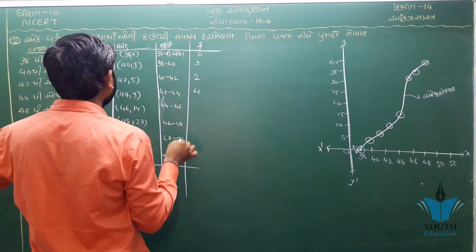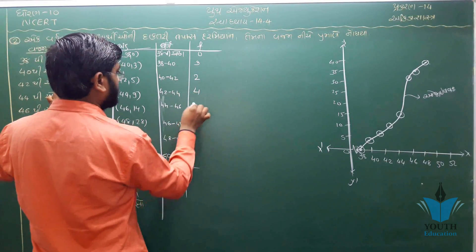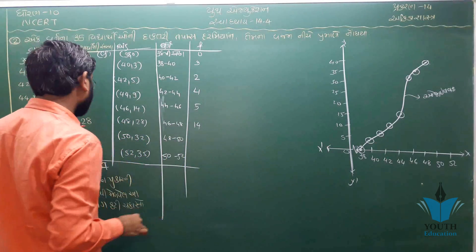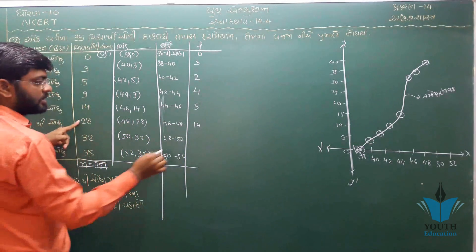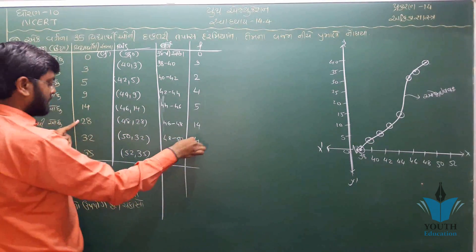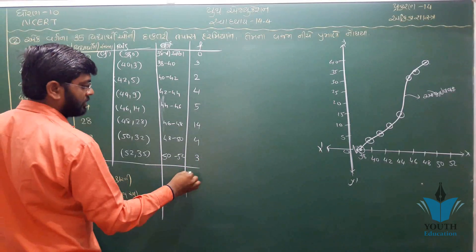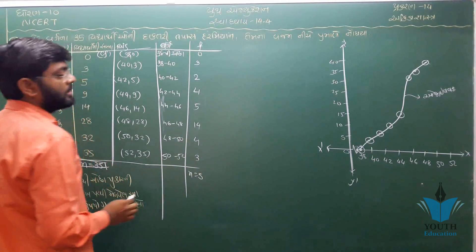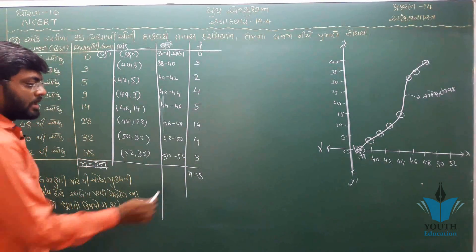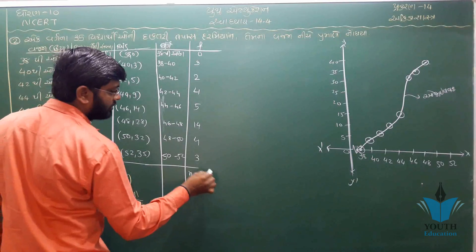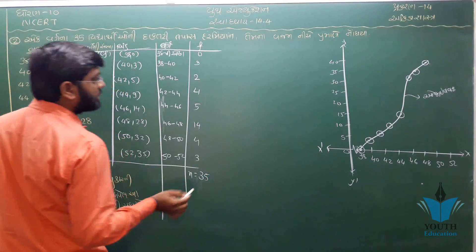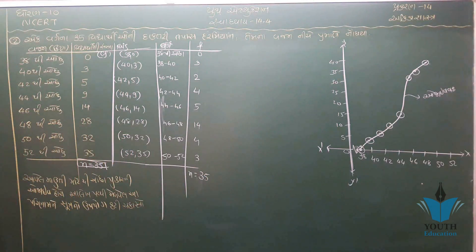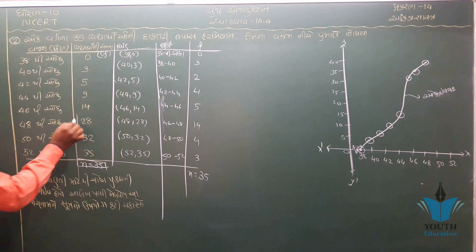ત્યારબાદ tally marks / frequency table ની ગણતરી કરીએ: 4, 35, 3, 5 → 35, 5, 4, 4, 4, 4, 4, 4 - આ રીતે દરેક વર્ગ-અંતરાલ (class interval) ની આવૃત્તિ નોંધવામાં આવે છે.